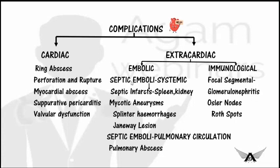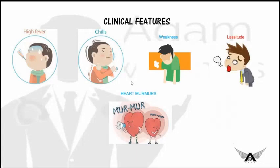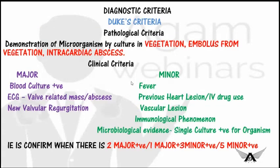The most prominent symptom of infective endocarditis is fever. Other associated symptoms are weakness, chills, and lassitude. On cardiovascular examination, the patient may be found to have murmurs. In most situations murmurs are not heard, but when the patient also has a valvular defect, murmurs may be detected.